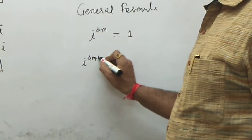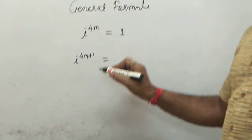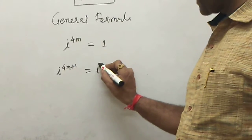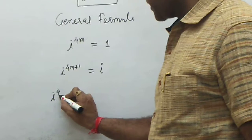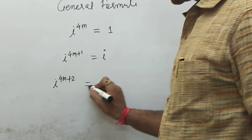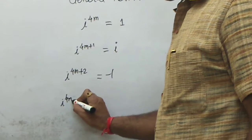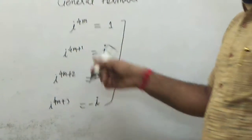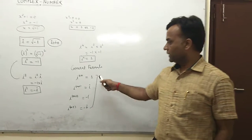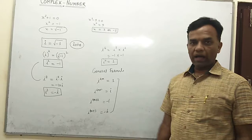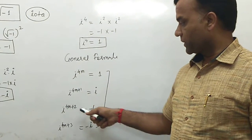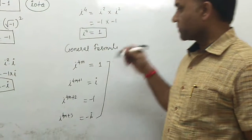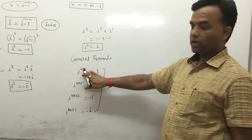So there are four general formulas: i^(4m) = 1, i^(4m+1) = i, i^(4m+2) = −1, and i^(4m+3) = −i. For i^(4m+2), that equals i^(4m) × i² = 1 × (−1) = −1. For i^(4m+3), it equals i^(4m) × i³ = 1 × (−i) = −i.